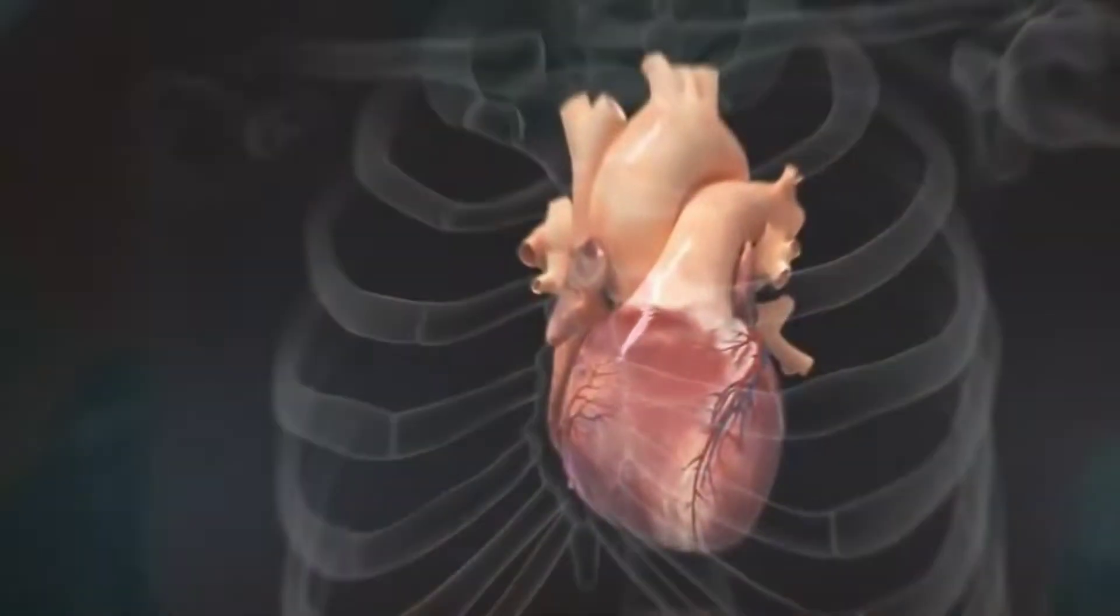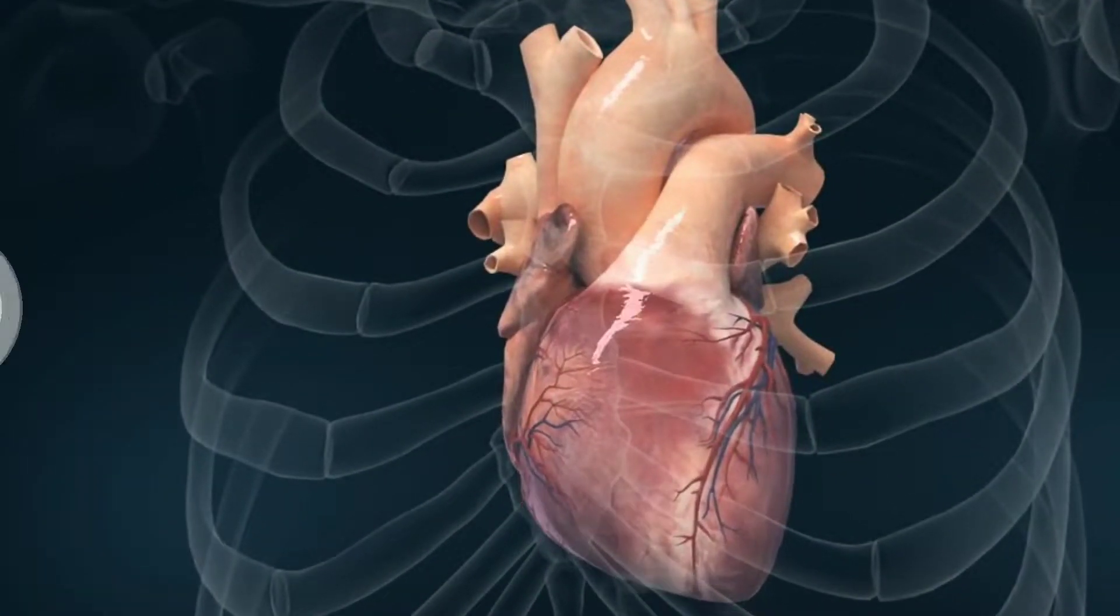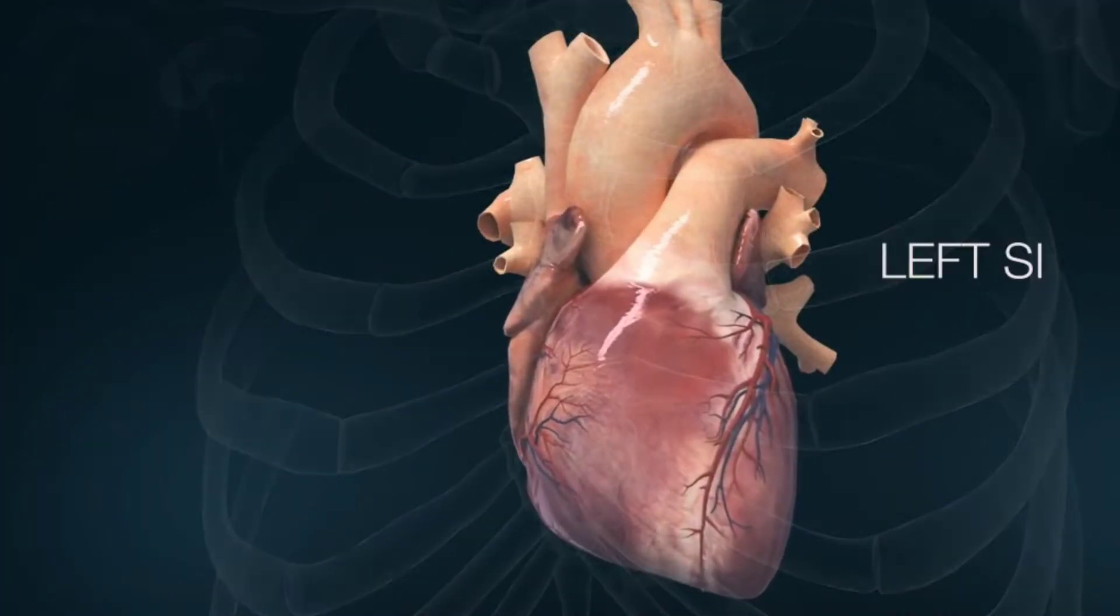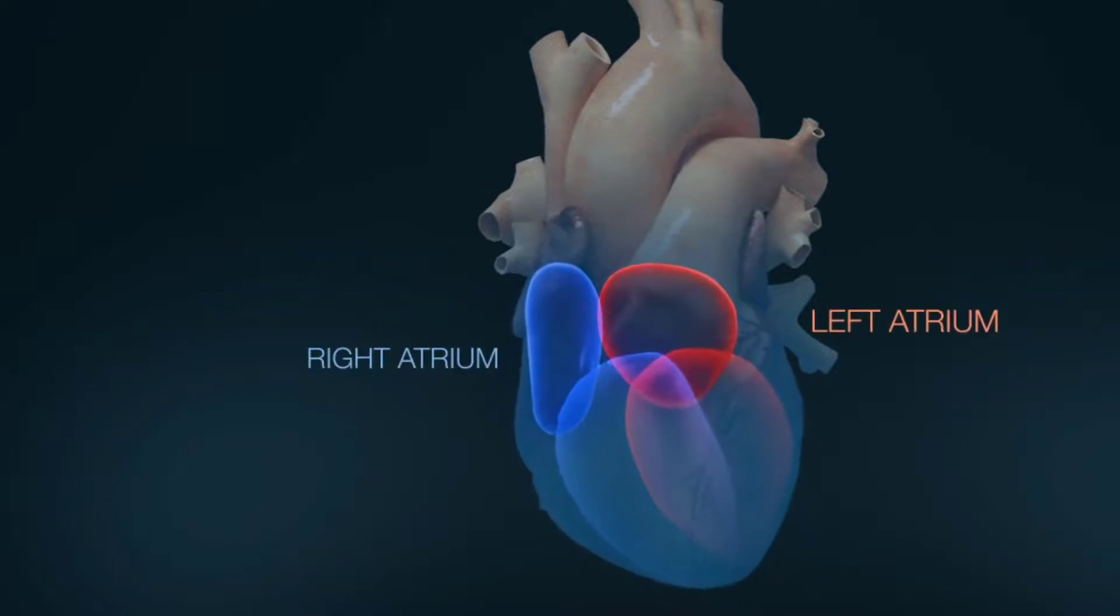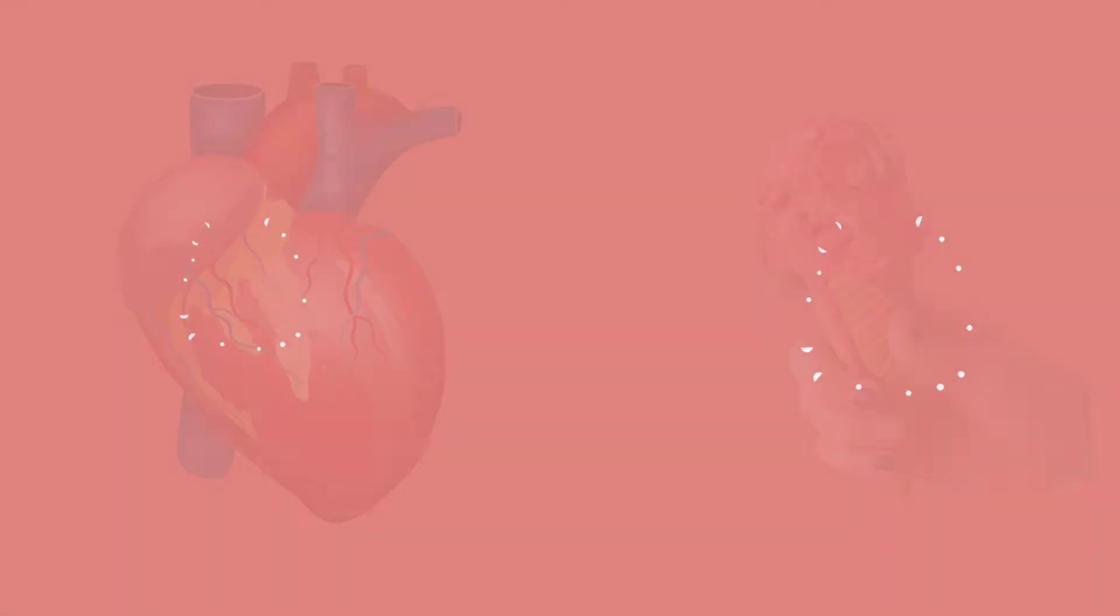The heart is located behind and slightly to the left of the sternum, in between the lungs. The human heart consists of four chambers: the left side and the right side, each with one atrium and one ventricle.